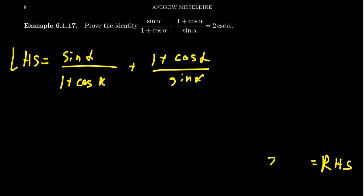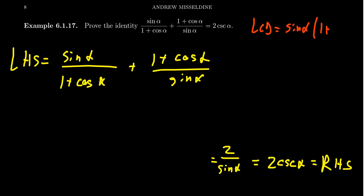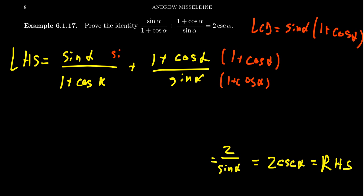We need to make this equal to 2 cosecant of alpha. Looking at the right-hand side, cosecant is 1 over sine, so this becomes 2 over sine of alpha. That's my goal — I want a denominator of sine. I'm going to add these fractions together, since the right-hand side has no addition. To do that I need a common denominator. The LCD in this situation will be sine of alpha times 1 plus cosine of alpha.